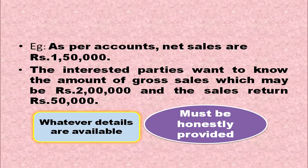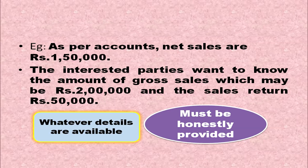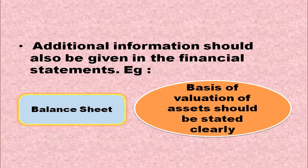For example, if net sales are shown as rupees 1,50,000 and users want to identify gross sales, this should be disclosed in the accounts. The gross sales may be rupees 2 lakh with sales returns of rupees 50,000. Sales returns are shown in the inner column and net sales in the outer column. Whatever details are available must be honestly provided. Additional information should also be available, and the basis of valuation of assets should be stated clearly in the balance sheet.